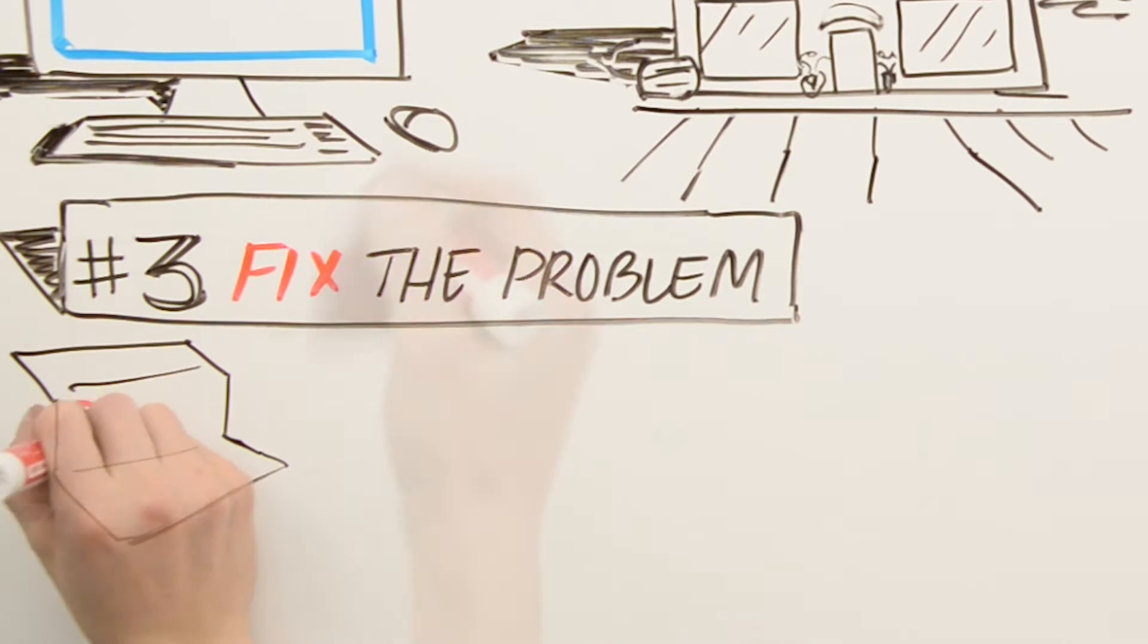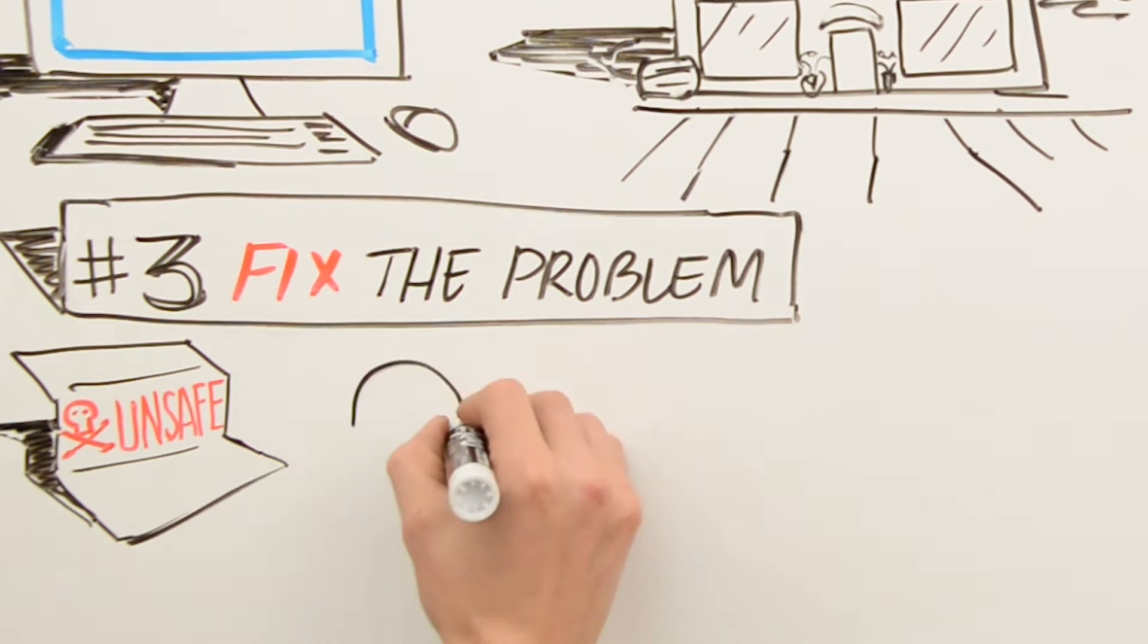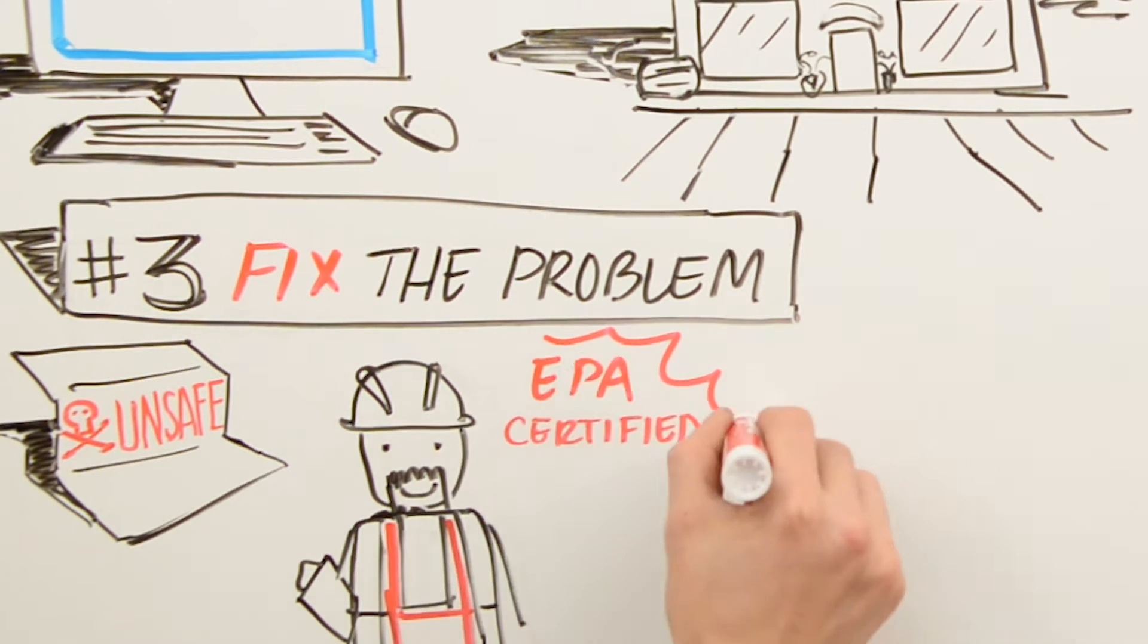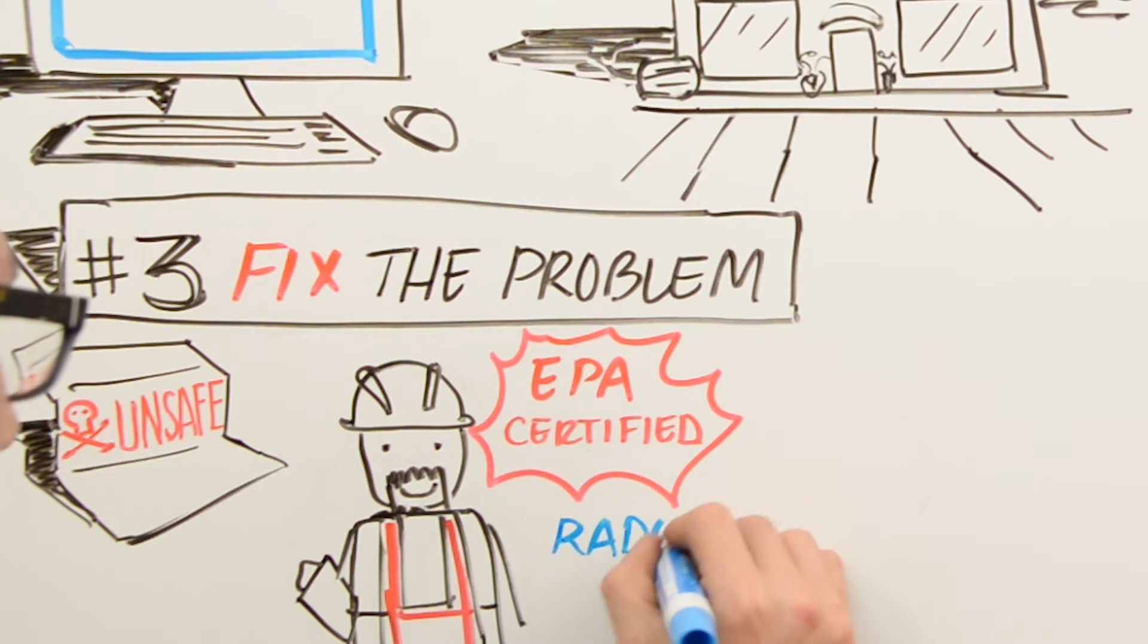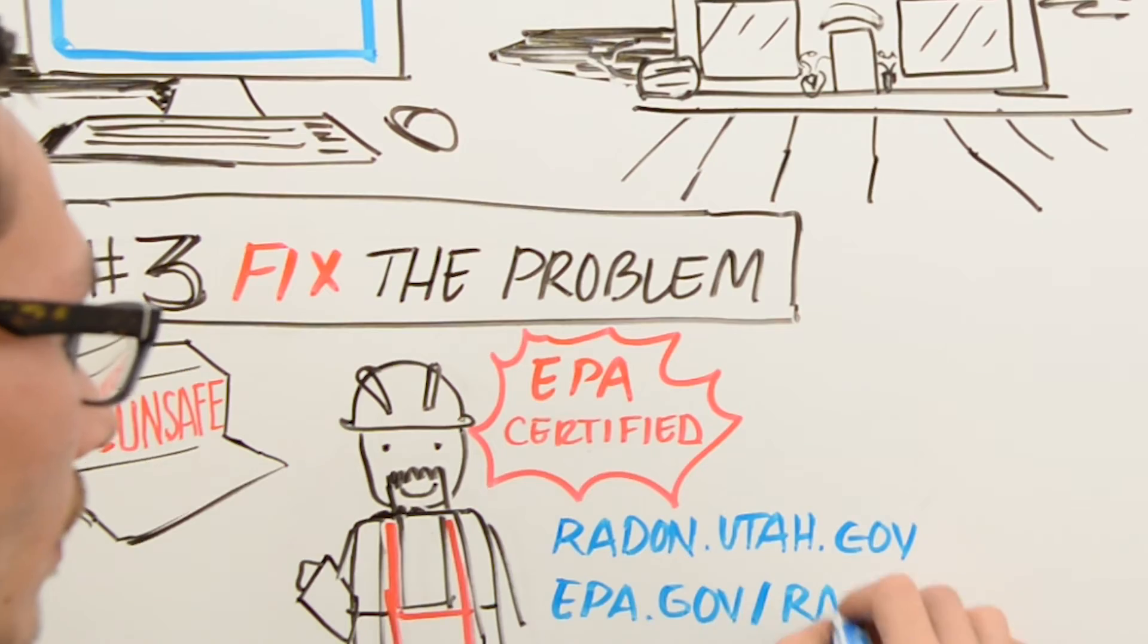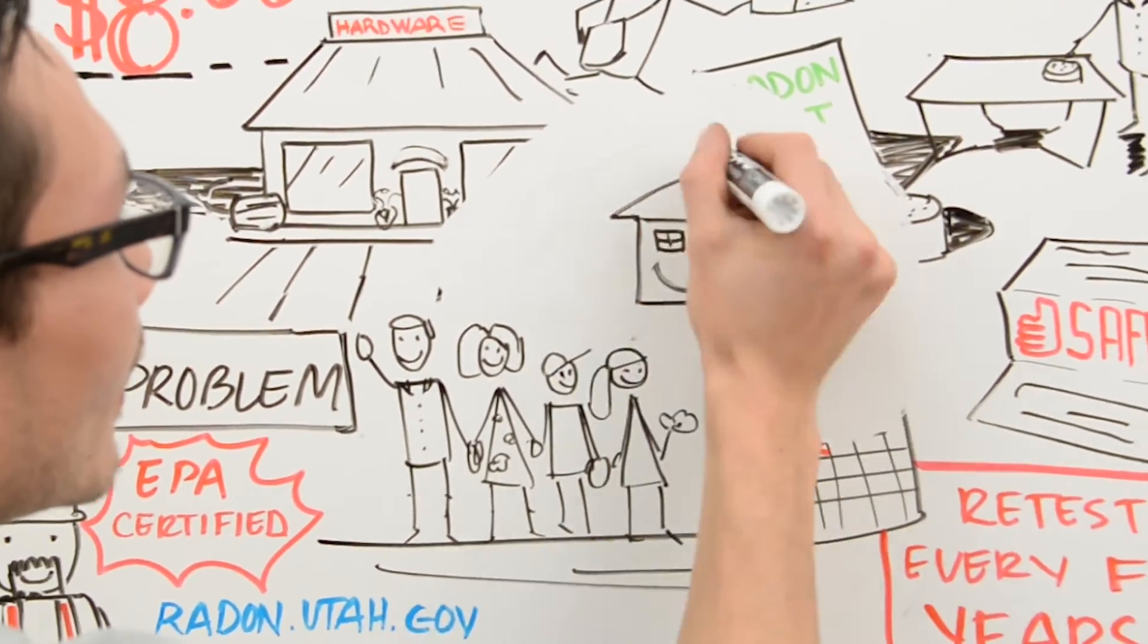If the test results show your home has unsafe levels of radon, you will need to fix it. Hiring a radon professional is the best way to do this. You can find a list of EPA certified mitigators at radon.utah.gov if you live in Utah or epa.gov/radon if you live in another state.